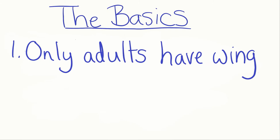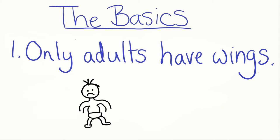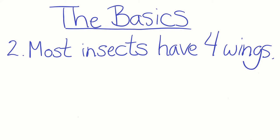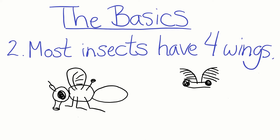One, only adult insects have wings. If you see an insect and it has wings, it is likely an adult and will not be growing anymore. Two, if an insect has wings, it is likely to have four. There are only two types of insects that have only two wings: flies, which everyone has heard of, and Strepsiptera, which pretty much no one knows about — but you could.